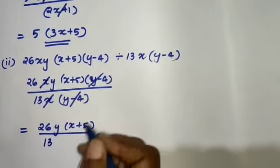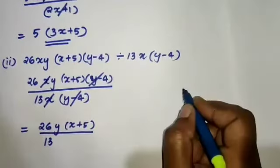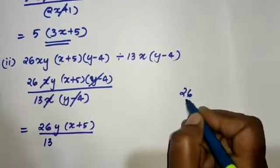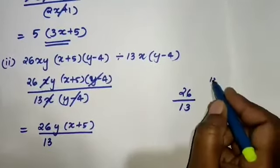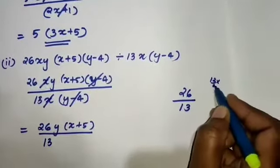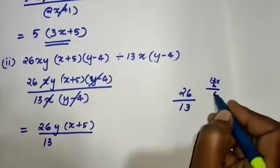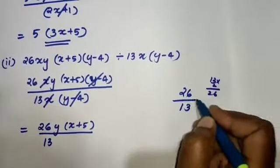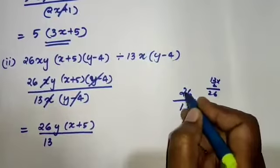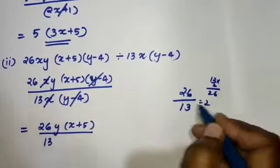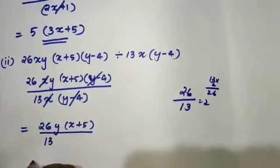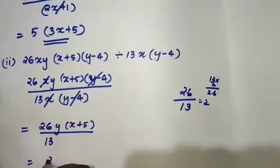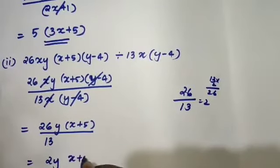We need 26 by 13 and we can simplify it. 13 into 2 are in the 26, so it is 2. 26 by 13 is 2. So we can write 2y into x plus 5.